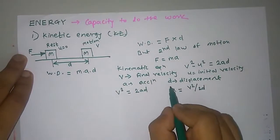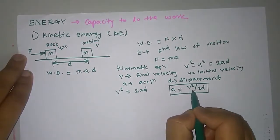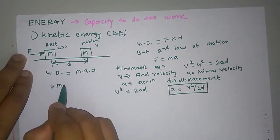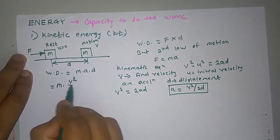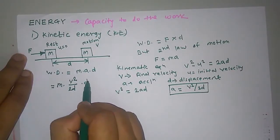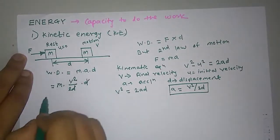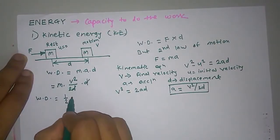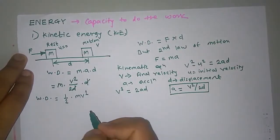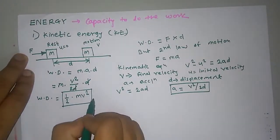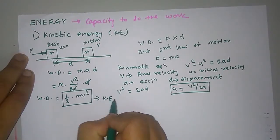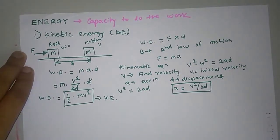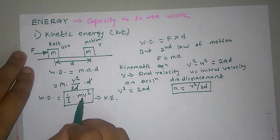Substituting A equals V²/2D into the work done equation, we get M into (V²/2D) into D. The D's cancel, giving us the familiar equation ½MV². This quantity ½MV² is the kinetic energy stored in the block.